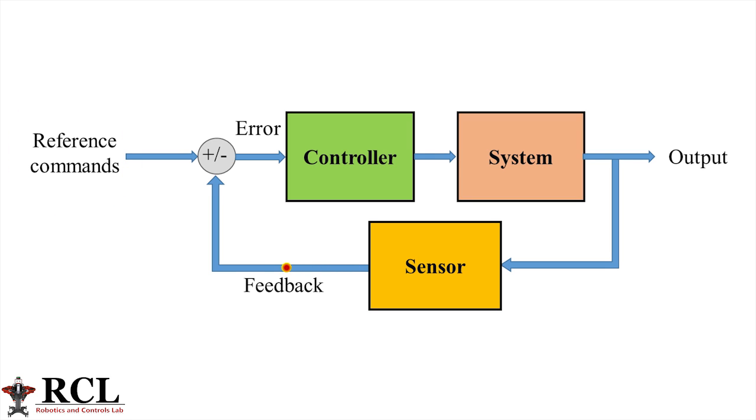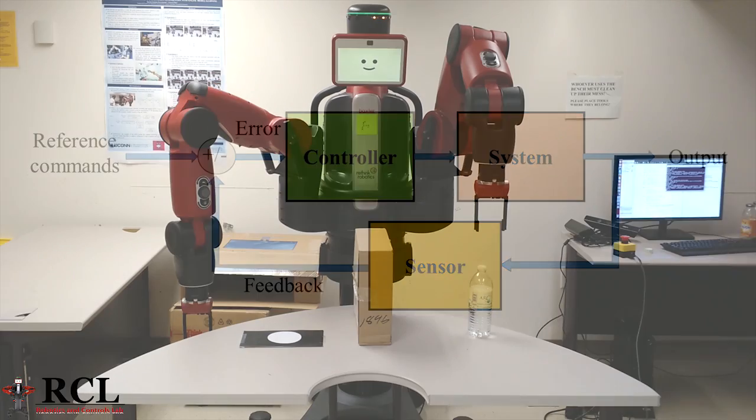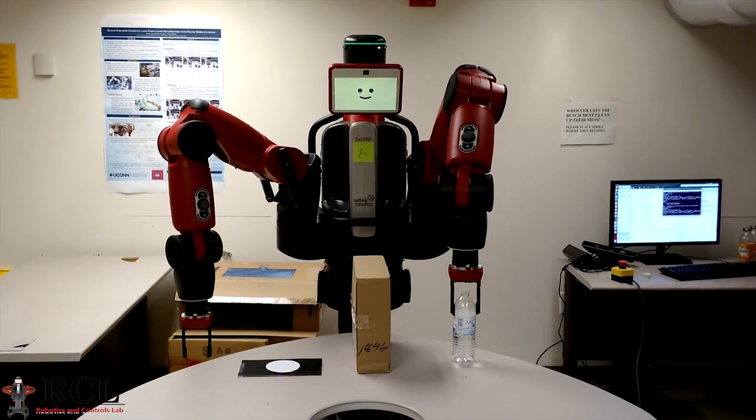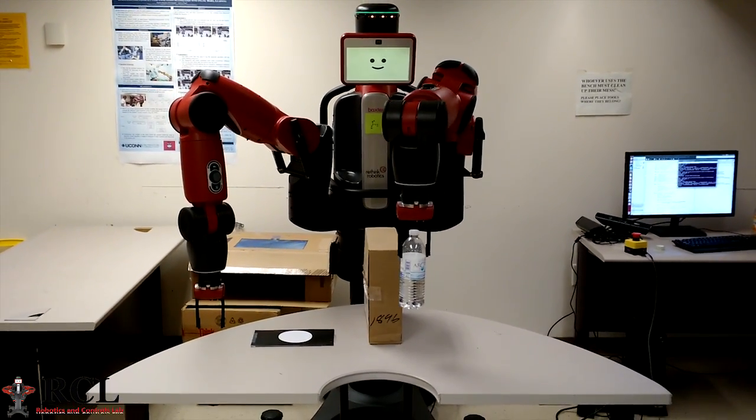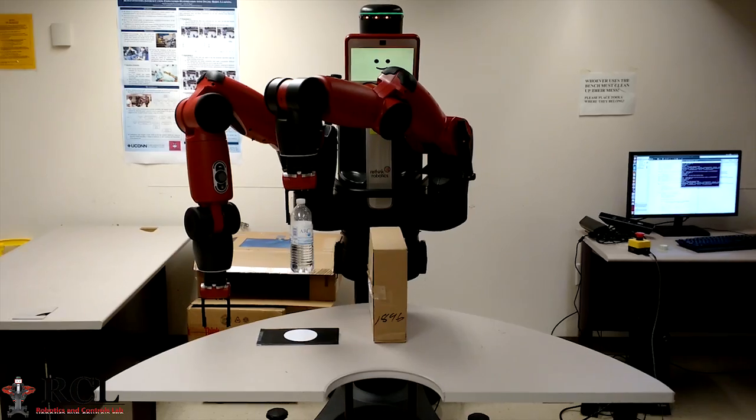The robot controller knows its current state from the sensors, which it uses to generate a mismatch or an error between the reference commands. This error is used by the robot controller to correct its position and orientation.